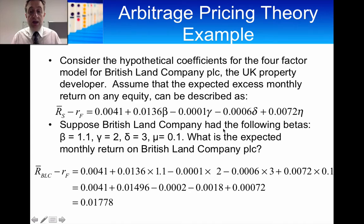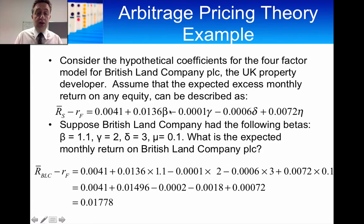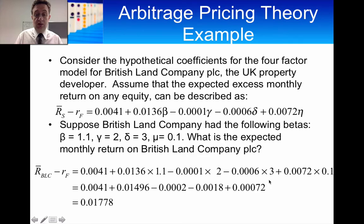To find the expected monthly return on British Land Company, we use the APT formula with the innovations in each factor — the difference between actual and expected. We've got the coefficients for each factor and it's a case of multiplying them out. If the first factor is the market factor, that would just be a one-factor APT market model — the difference between the market return and the risk-free rate. This gives you the excess monthly return for British Land Company as 1.778%.